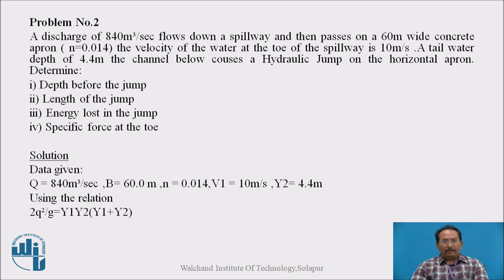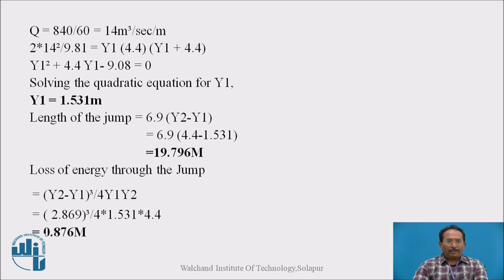Now using the relation 2Q square upon G is equal to y1 y2 into bracket y1 plus y2. I told you before also we have already served this equation when we are starting the momentum equation to derive the equation for the conjugate depth. So 2Q square upon G is equal to y1 y2 into bracket y1 plus y2. Now using this equation we get a quadratic equation: y1 square plus 4.4 y1 minus 9.018. Solving for y1 we will get 1.531 meters.